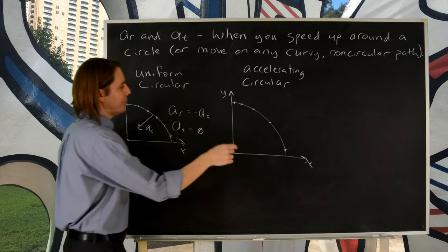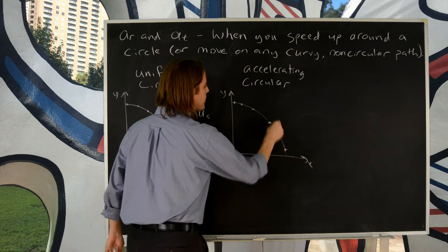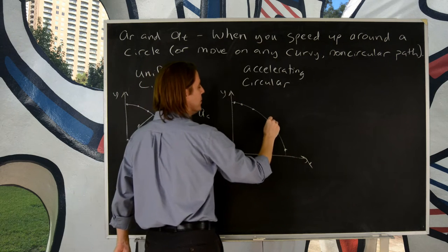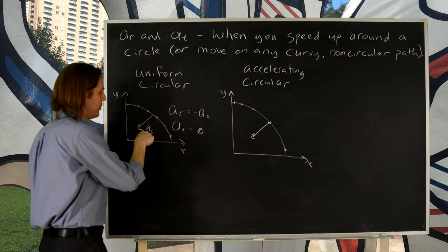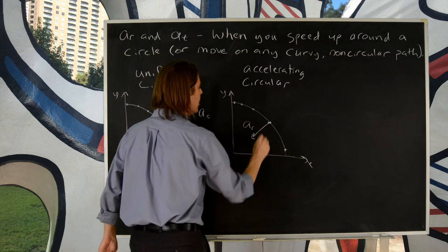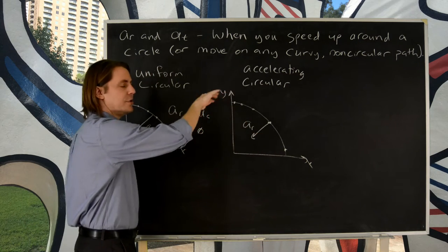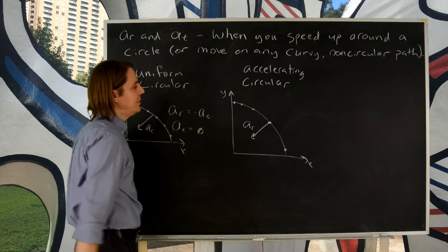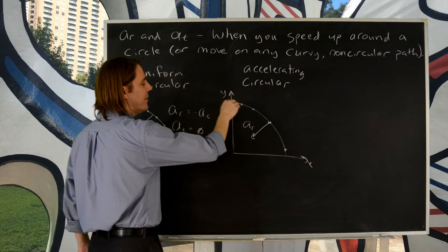Well, if you picked a point in time, say right here, you would still have a radial component to the acceleration. I'm not going to label it centripetal because we're no longer doing uniform circular motion. You would still have an AR because the velocity vector is changing direction. And that's really where the radial part comes from. The velocity is changing direction. But you also now have the speed increasing.